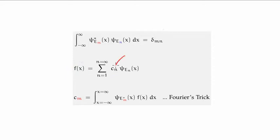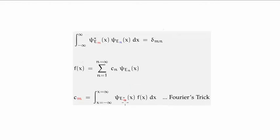These coefficients are known as probability amplitudes. In order to calculate them we exploit the orthonormality integral using what's known as Fourier's trick, where we take the inner product of each of the basis states with the wave function of our particle in the infinite potential well, and each time we compute this integral we get the corresponding probability amplitude.